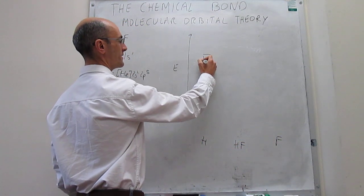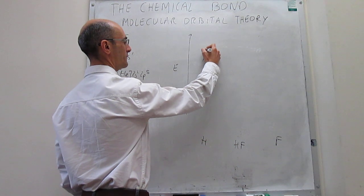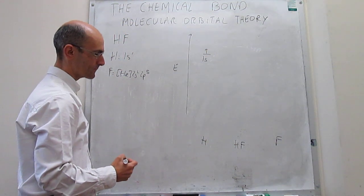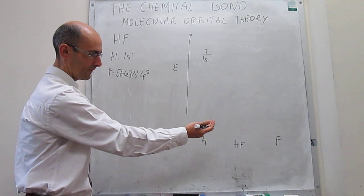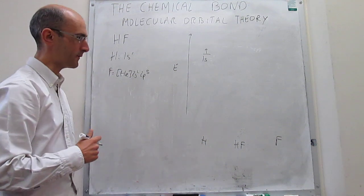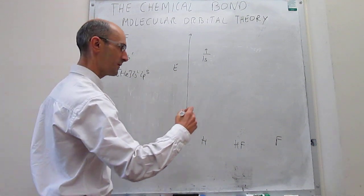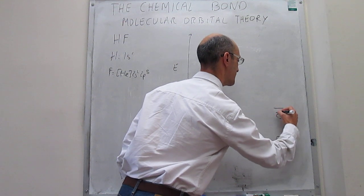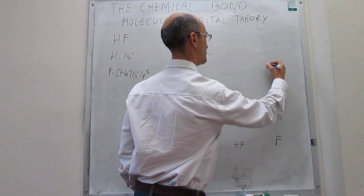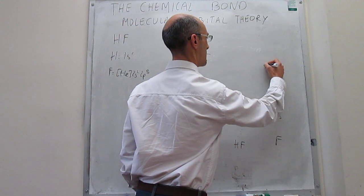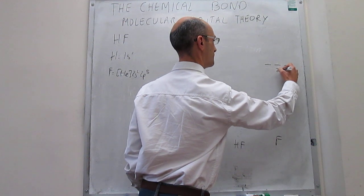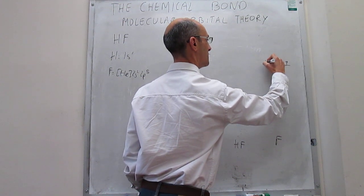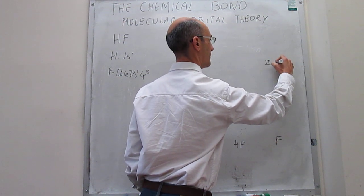So that will be the 1s orbital of hydrogen with 1 electron, and then we have the valence orbitals of fluorine. The 2s is here, and the 2p orbitals are out here — with 1, 2, 3, 4, and 5 electrons total across those orbitals.